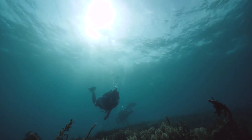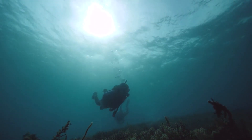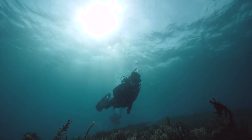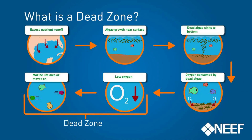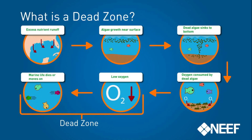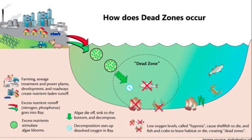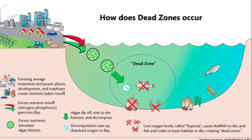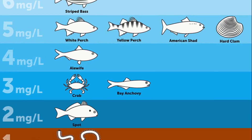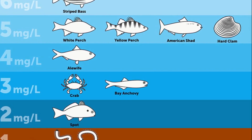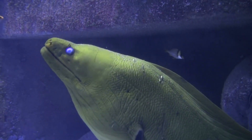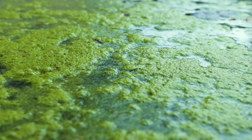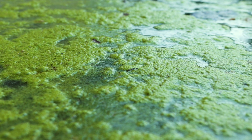Welcome to Think Dart. Today we dive deep into Earth's dead zones, explore what's turning vibrant seas into underwater deserts, and uncover the shocking truths scientists are only now discovering. What exactly is a dead zone? A dead zone is an area in a lake or ocean where dissolved oxygen drops too low to support most marine life. Oxygen levels below about 2 mg/L are dangerous; below 0.5 mg/L, nearly all life struggles or dies.